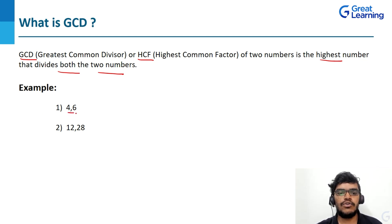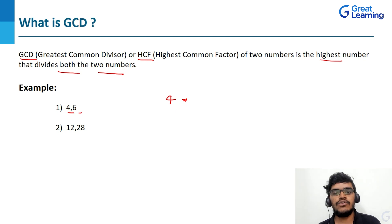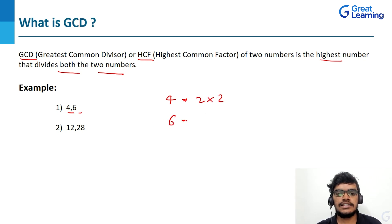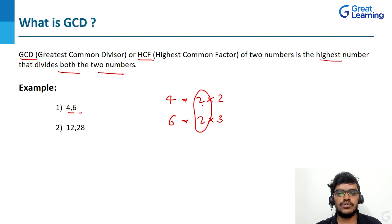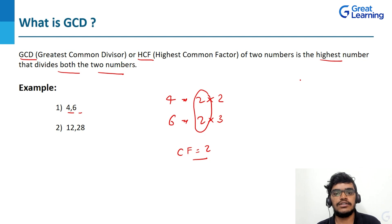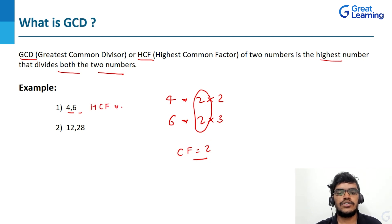Here I have the example of four and six — these are the two numbers. Let me find the factors. Four is divisible by which numbers — we know it is divisible by two, so I can write it as two times two. Coming to six, I can write it as two times three. So the common factor here is two. HCF is nothing but the highest common factor, and here the highest common factor is two. So the HCF of four and six is two.